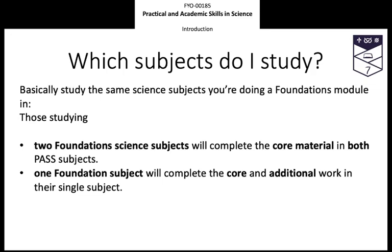Those of you doing two different sciences will only need to study the core material in both of those subjects — for example, chemistry core material and life sciences core material — and that will be the subject of most of your tutorials as well as a lot of the materials that are online. For those of you only doing one science — whether that's science and maths, science and computer science, or single honours — there is additional material for you to study as part of your single science subject. Essentially, everybody studies two units within PASS: either two core subjects, or the core and additional units in two different subjects.